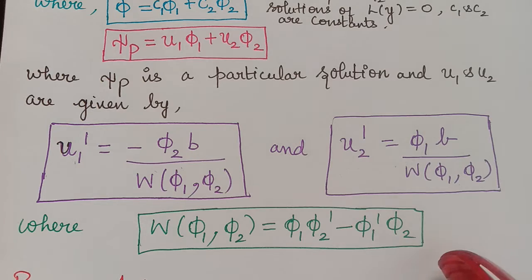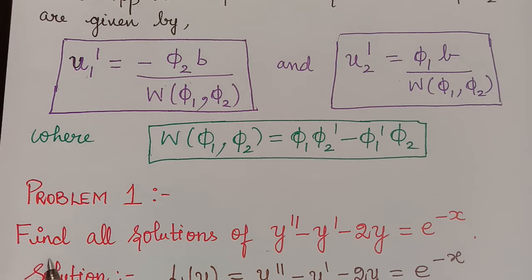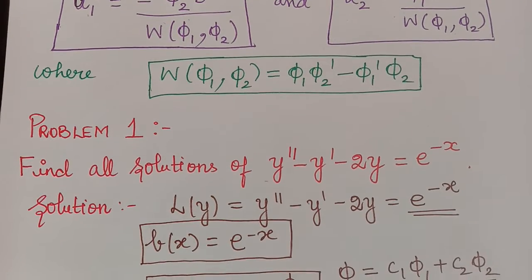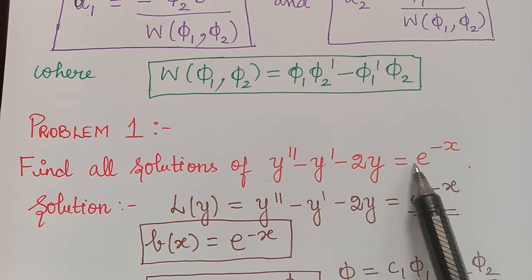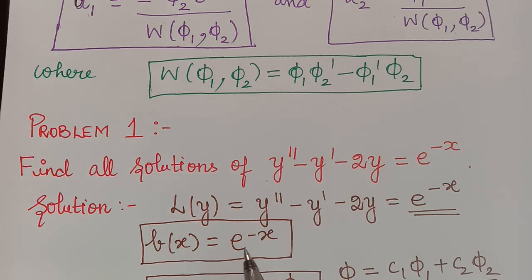Now we have a problem: find all solutions of y'' minus y' minus 2y equal to e^(-x). We can see that L of y equals B of x, where B of x is equal to e^(-x). So this is a non-homogeneous equation of order 2.